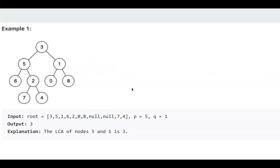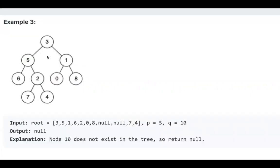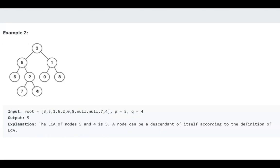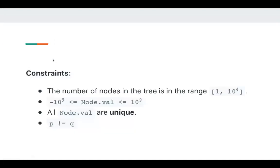Given two nodes, we need to find the lowest common ancestor. In this example, p is 5 and q is 1, so the lowest common ancestor is 3. In this example, p is 5 and q is 4, so the lowest common ancestor is 5. In the third example, p is 5 and q is 10. 10 does not exist in this tree, so we need to return null. The constraint is that p is not equal to q.